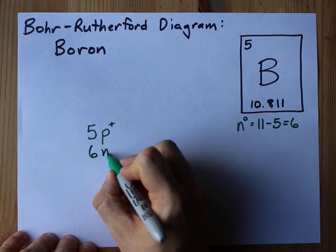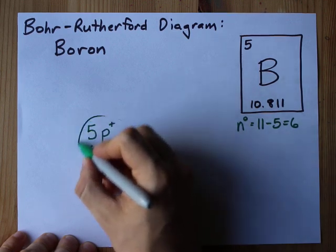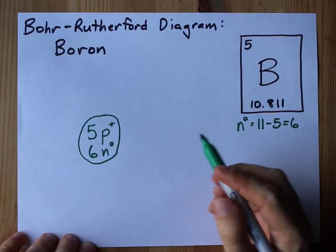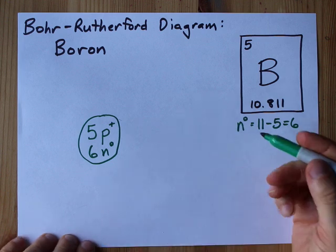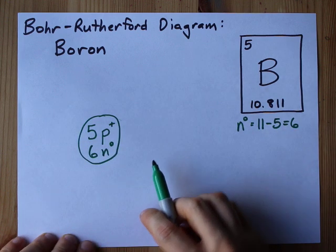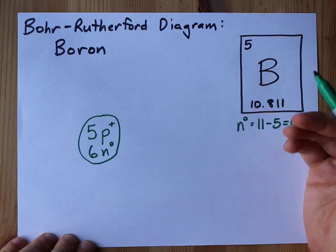You'll probably have to write that in the nucleus as well. So this is the nucleus of our atom. We also need to fill this Bohr-Rutherford diagram with 5 electrons.